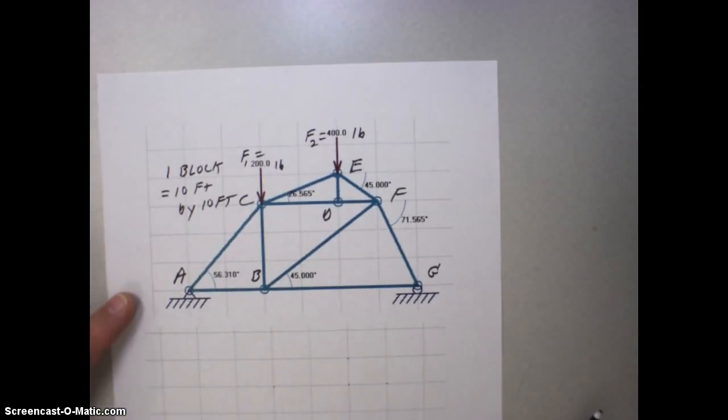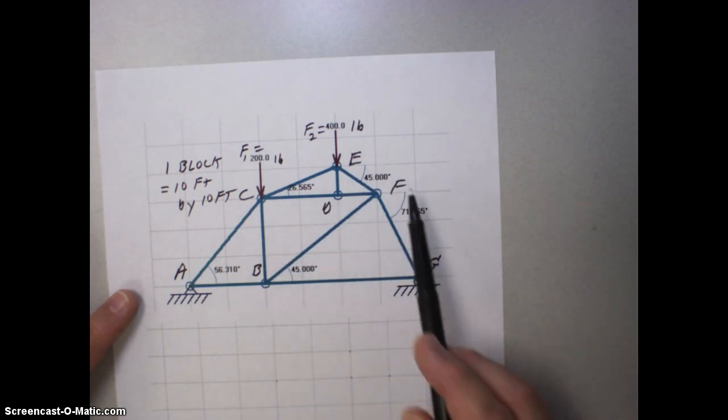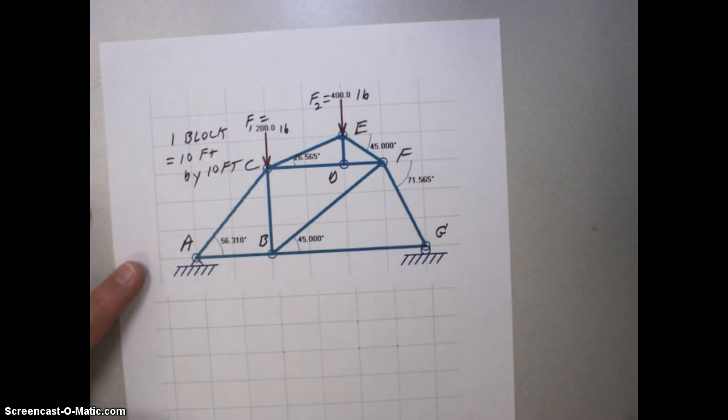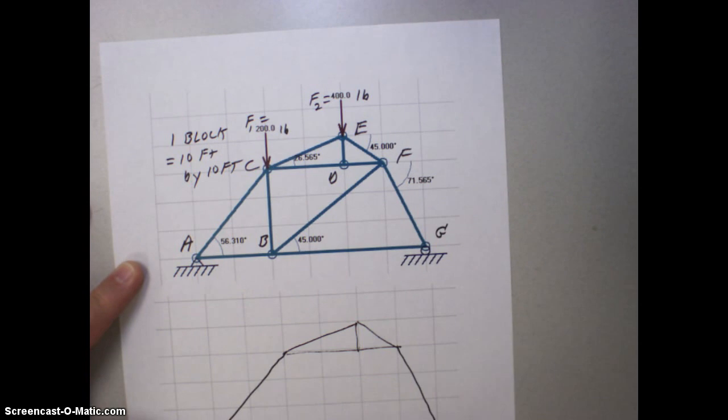First thing I want to do is look at my truss. I've got a pin here at A and a roller here at G. I labeled it A, B, C, D, E, F, G to correspond to how it's labeled in MD solids. So let's draw my free body diagram. I'm not really worried about the internal structure at the moment, but later on it will become important. So I'll go ahead and draw it in.